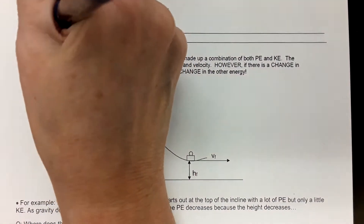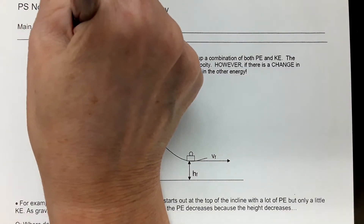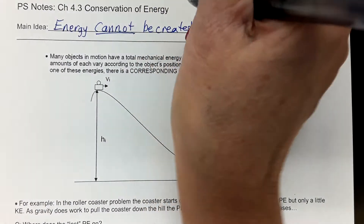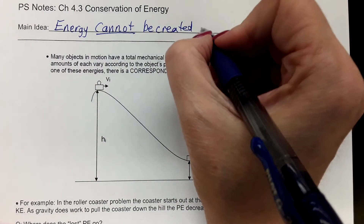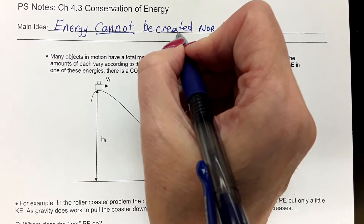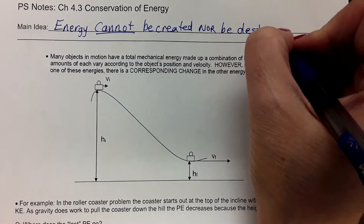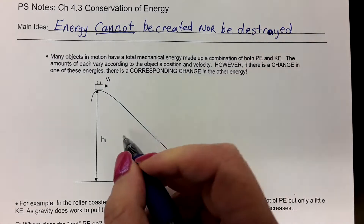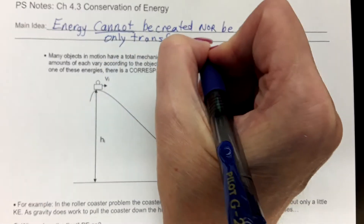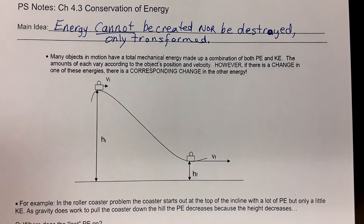The main idea of conservation of energy is that energy cannot be created — meaning out of nothing, it can't just suddenly appear — nor can it be destroyed. Energy can only be transformed into another form. It takes work to convert energy from one form to another.